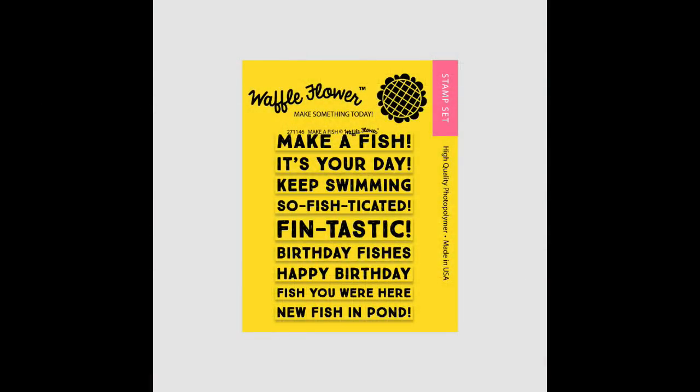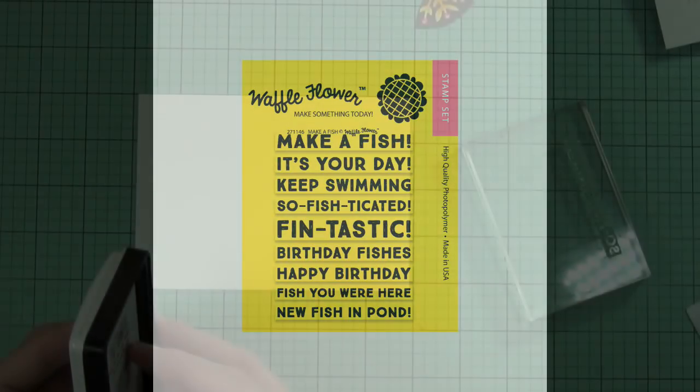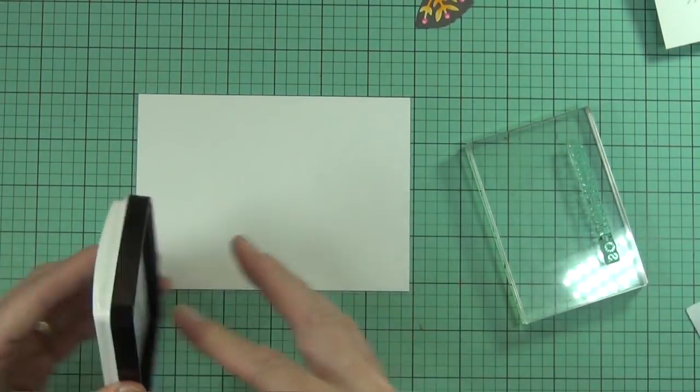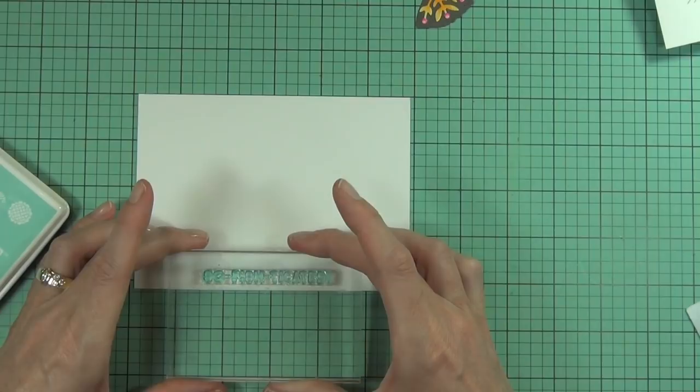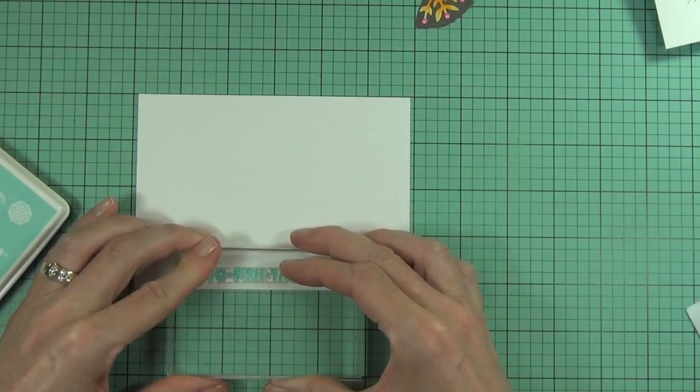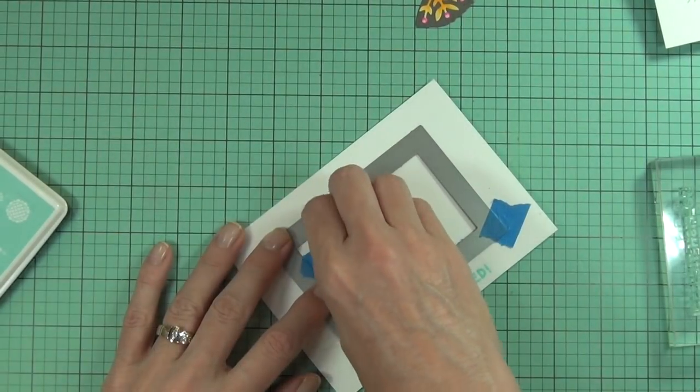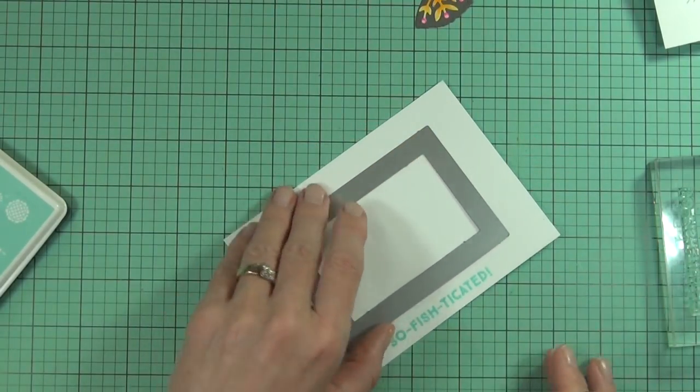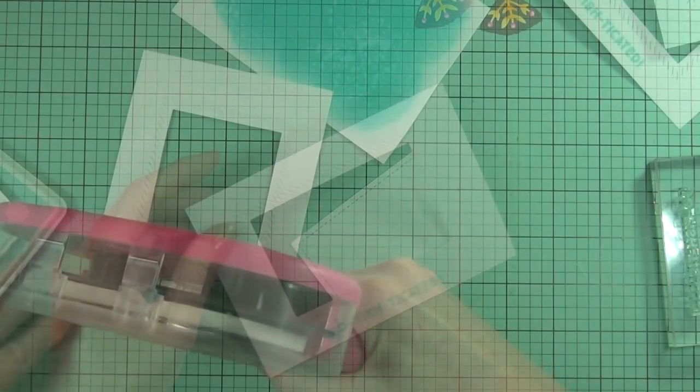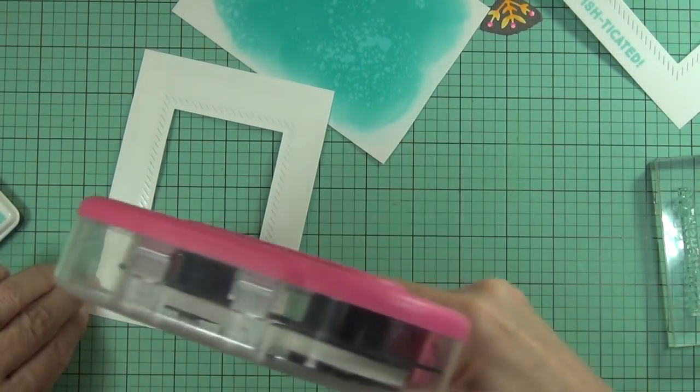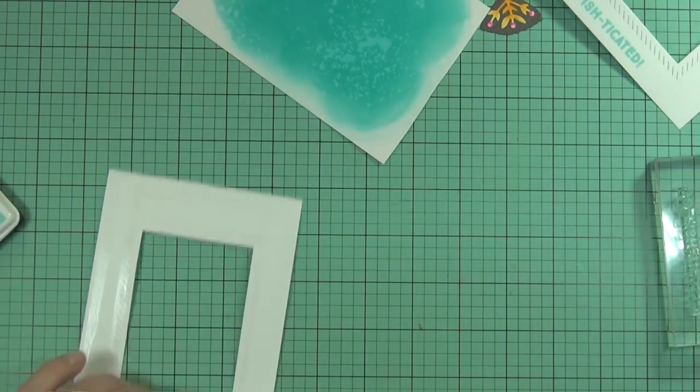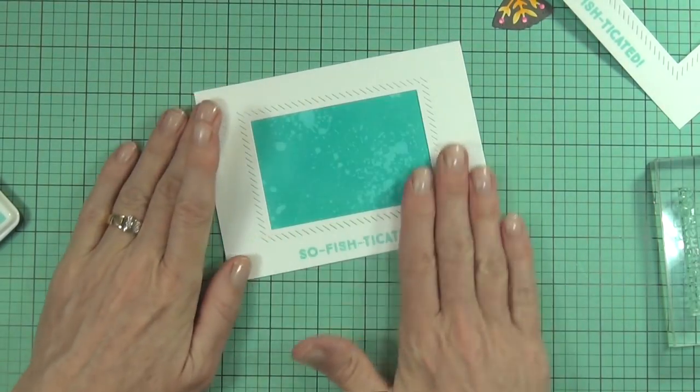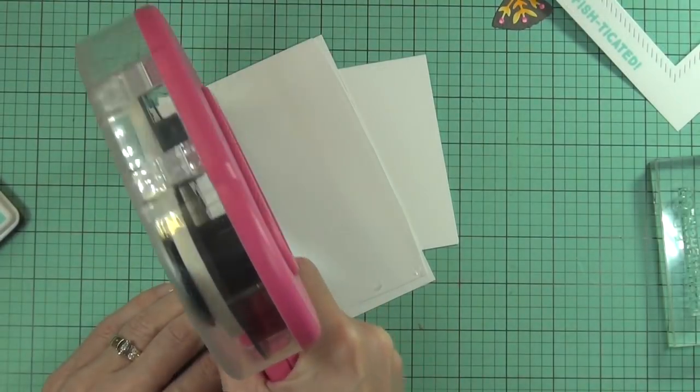So the stamp set that I'm using today is coordinating—it's also called Make a Fish—and it has lots of fun bold sentiments. And this is actually the second time I created my front panel for my card because I got ink on the other one, but anyway, so you get to see the second and better version. So I've stamped out my sentiment using the new Fish in Pond ink, and I'm using the stitched layers dies to cut a window within the frame. And then I can just adhere this panel to the watery panel that I created. And normally I'd pop this up, but today I just didn't feel like it, and I have a landscape top fold card that I'm going to adhere this to.